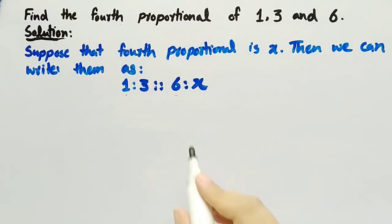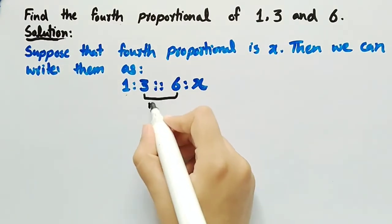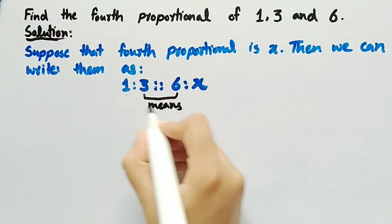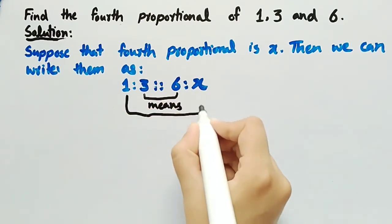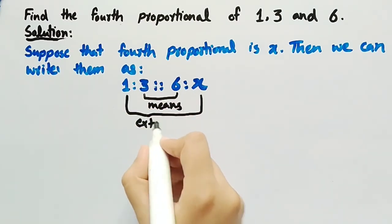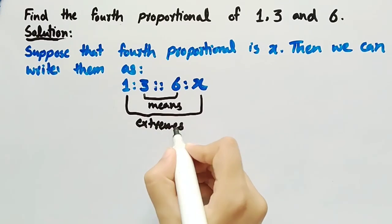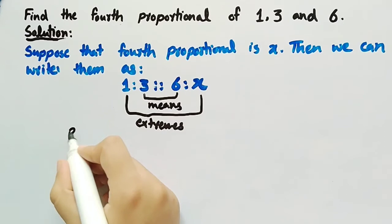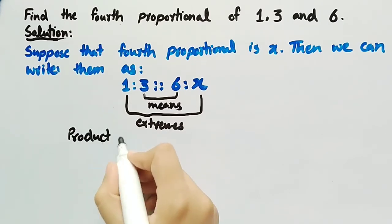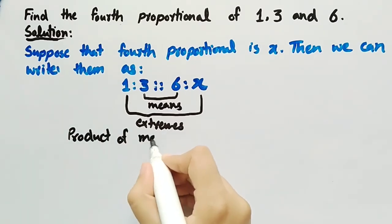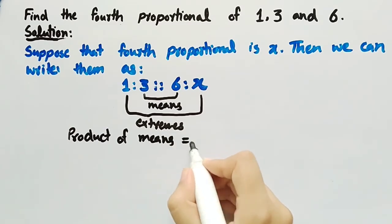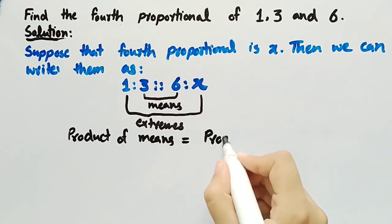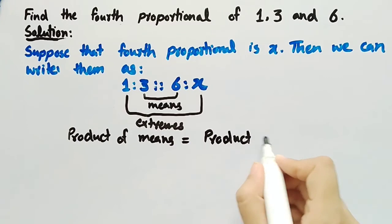In this proportion, these two values are means of proportion and these two values are extremes of proportion. In a proportion, we know that product of means is equal to product of extremes.